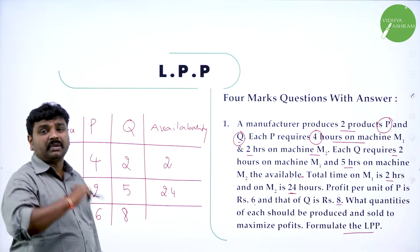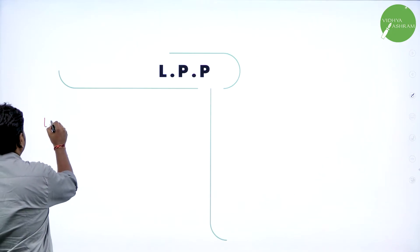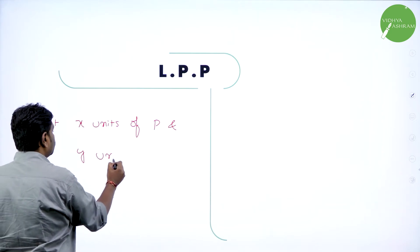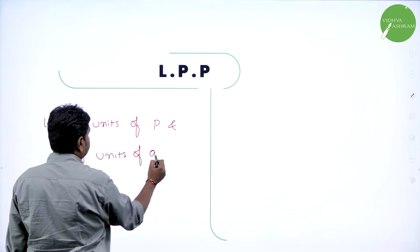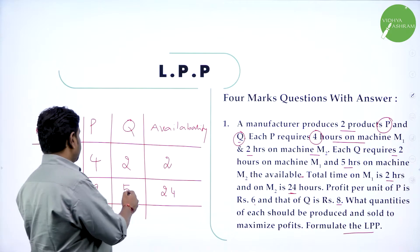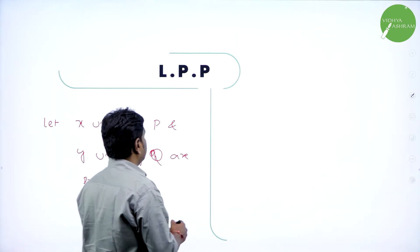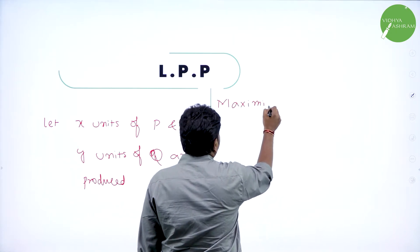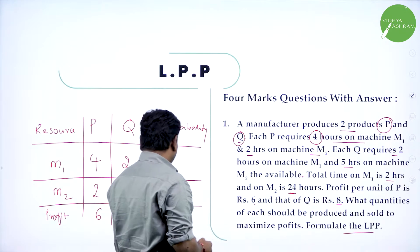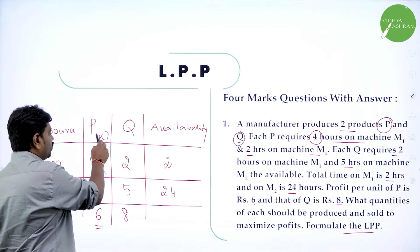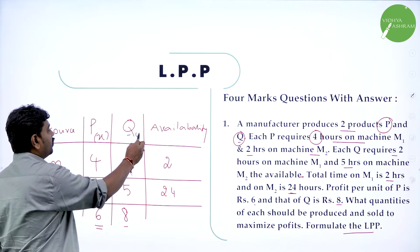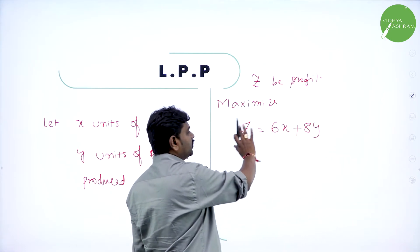Now I will formulate. If you want to formulate LPP, first you define unknowns. Let x units of P and y units of Q be produced — this is our assumption. We need to maximize the profit. So let Z be the profit. Z equals profit of P: 6 rupees per unit, producing x units gives 6x. Plus profit on Q: 8 rupees per unit, producing y units gives 8y.